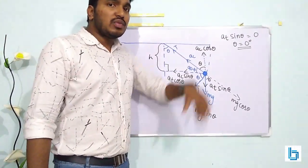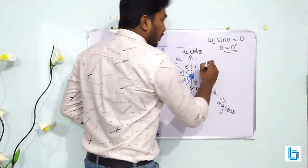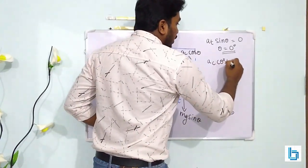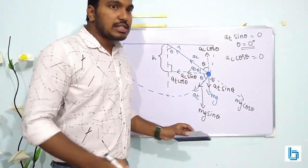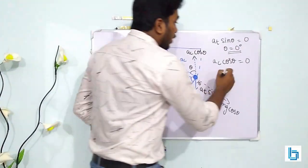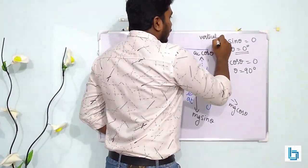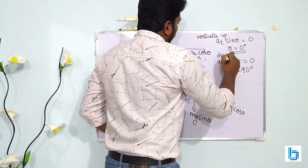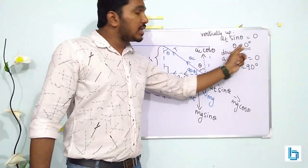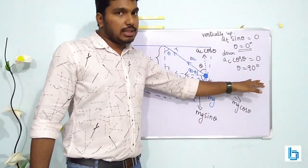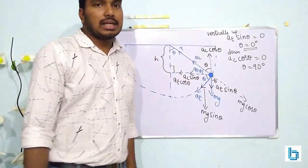If the direction of acceleration is vertically downwards, then the upward component of acceleration should be zero. So AC cos theta should equal zero, which means cos theta equals zero, giving theta equal to 90 degrees. So vertically up corresponds to theta equal to 0 degrees and vertically down corresponds to theta equal to 90 degrees.